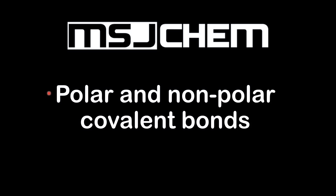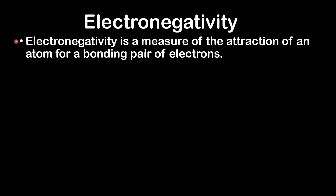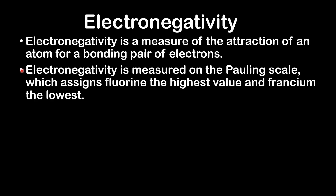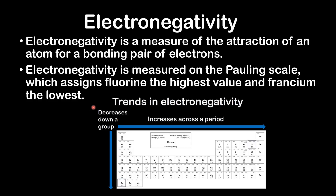In this video I'll be looking at polar and nonpolar covalent bonds. We'll start with a review of electronegativity. Electronegativity is a measure of the attraction of an atom for a bonding pair of electrons. It is measured on the Pauling scale, which assigns fluorine the highest value and francium the lowest. The trend in the periodic table is electronegativity increases across a period and decreases down a group.